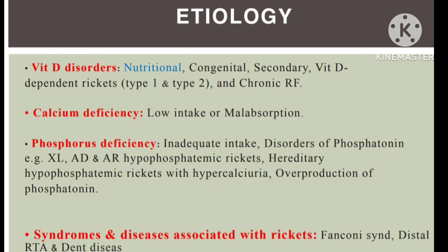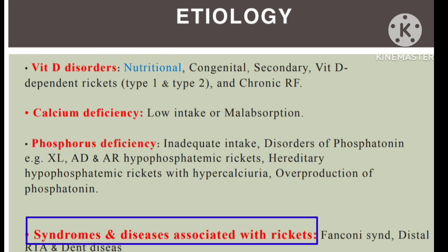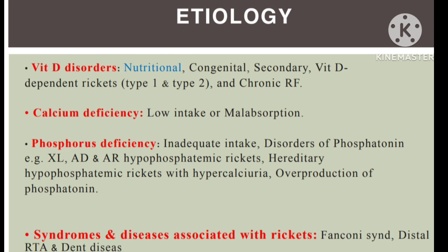Ricketts occurs due to vitamin D disorders, calcium deficiency, or phosphorus deficiency, or in certain diseases and syndromes associated with Ricketts. Vitamin D disorders may be due to nutritional causes, congenital causes, or chronic kidney disease. Phosphorus deficiency occurs with inadequate intake. Associated syndromes include Fanconi syndrome and Dent's disease.